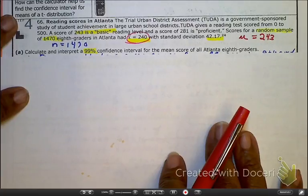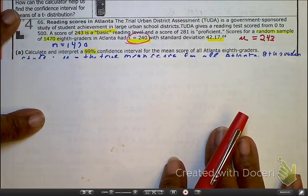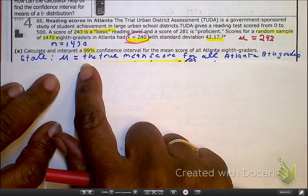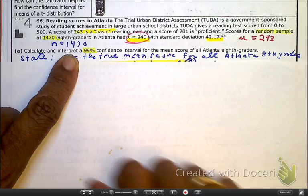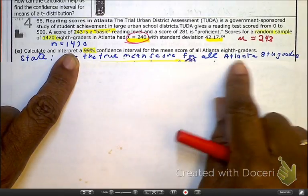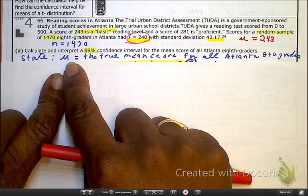So first of all, I've got to state mu. And if you don't remember the mu as I cover this up, reminding me that I need a manicure, you can just say the true mean score of all Atlanta eighth graders. You can have that. If you don't want to put the Greek there, that's fine.